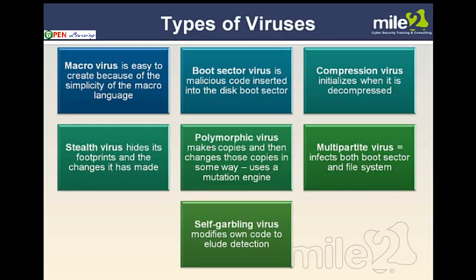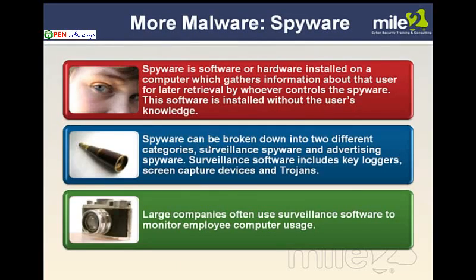As far as some virus types: macro viruses — Microsoft Word and Excel have macro capability, and there are viruses based on that, which is why macros are sometimes turned off in Word. Boot sector viruses insert malicious code into the disk boot sector — a nasty one. Compression viruses initialize when you decompress the file. Stealth viruses hide their footprints and changes they've made — trying to hide their presence. Polymorphic makes copies and changes those copies — think mutation. Multipartite can infect in different places: the boot sector, the file system. Self-garbling viruses modify their own code to try to avoid detection.